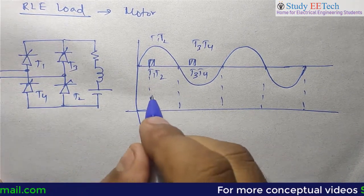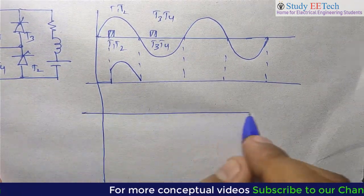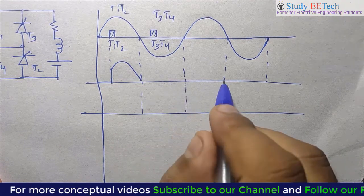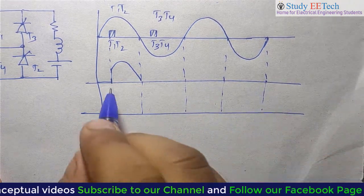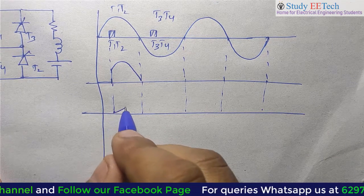Then we will get some voltage. Now drawing the current waveform. Here is the trick of R-L-E-Load. We can assume that the current is starting from here.